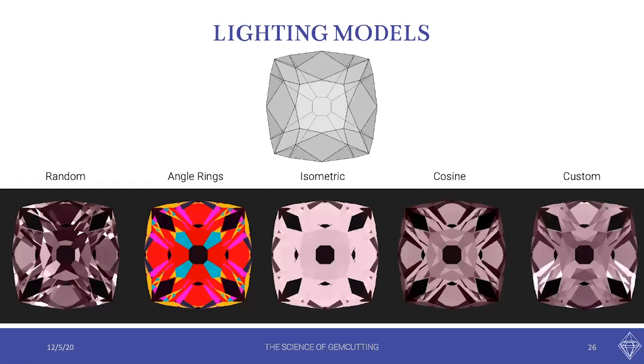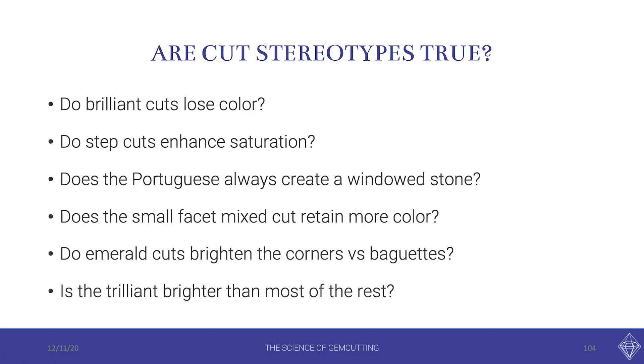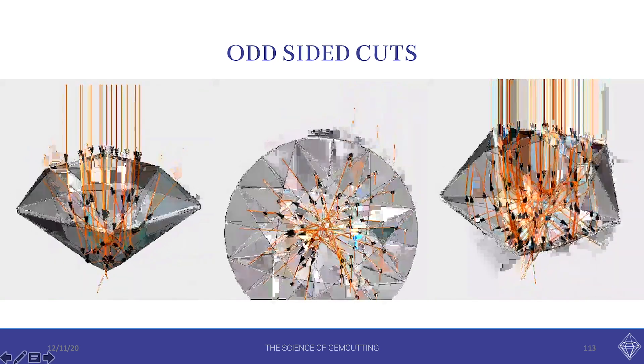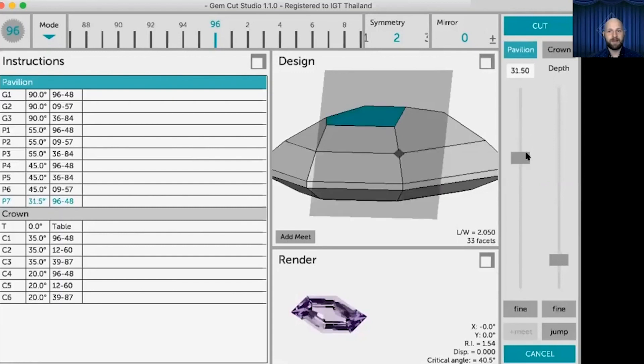Each design evokes a unique feeling, between contrast, light return, color saturation, and scintillation. I wanted to be able to look at each type of stone, each cut, and critically analyze it, compare it, talk about these different kinds of moods and feelings that the different patterns create so that we can be more intelligent in our approach towards design.